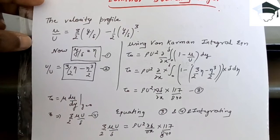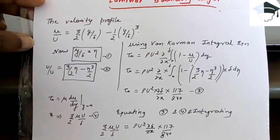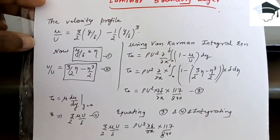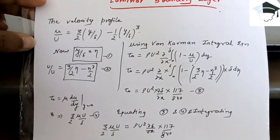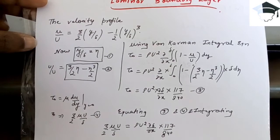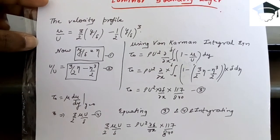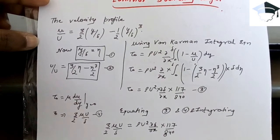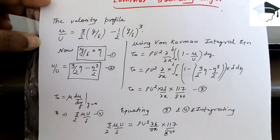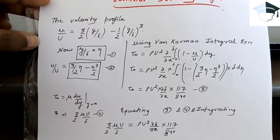Now assuming y/δ = η, so dy = δ·dη. Also u/U becomes (3/2)η − η³/2. This was the first and second equation.